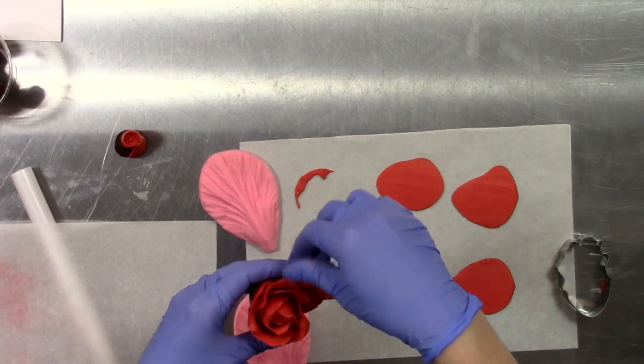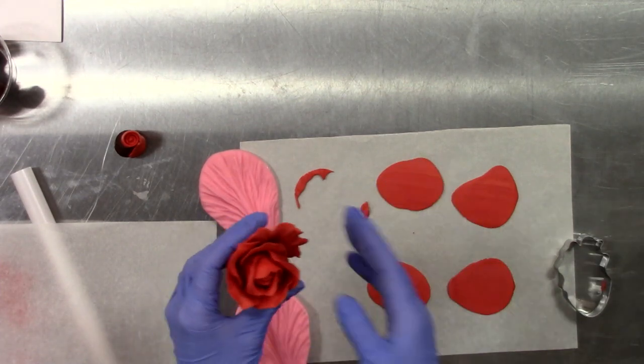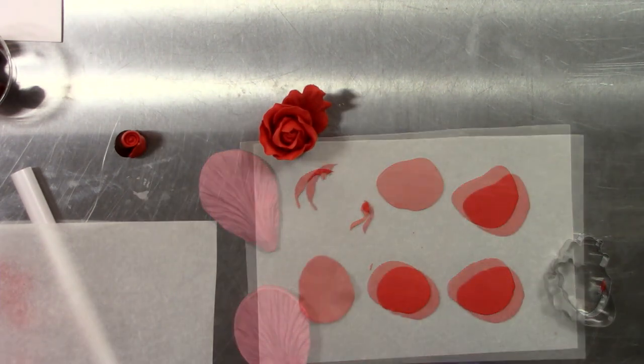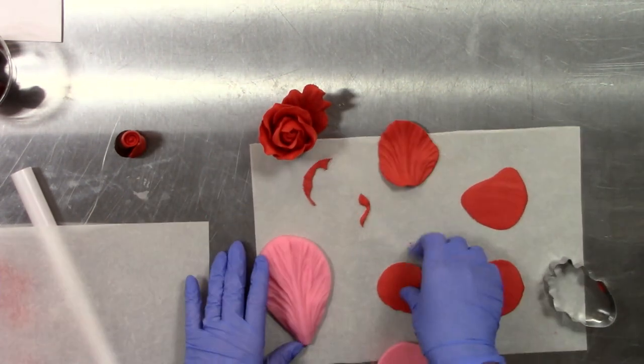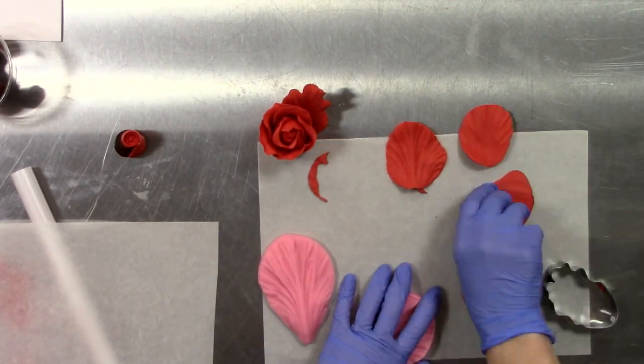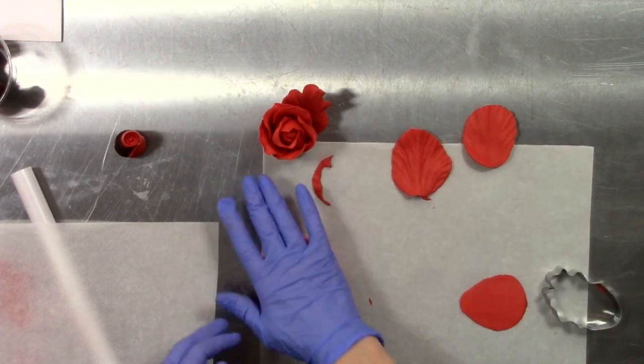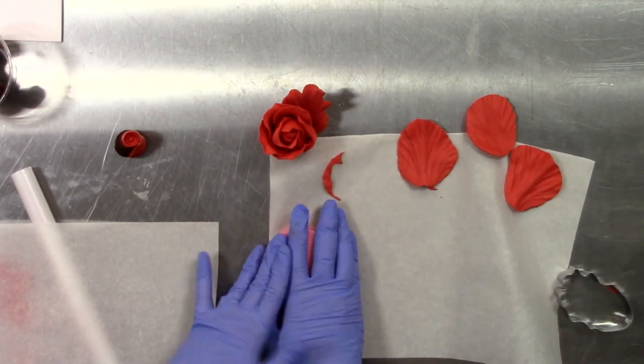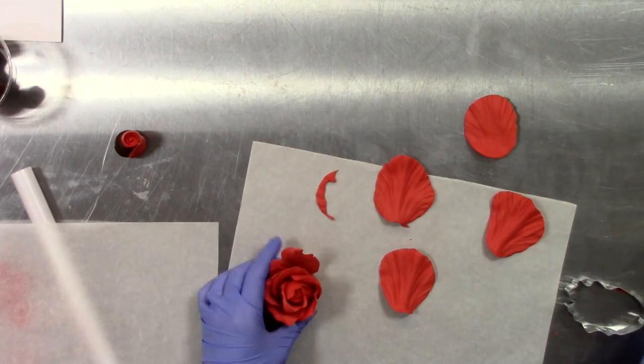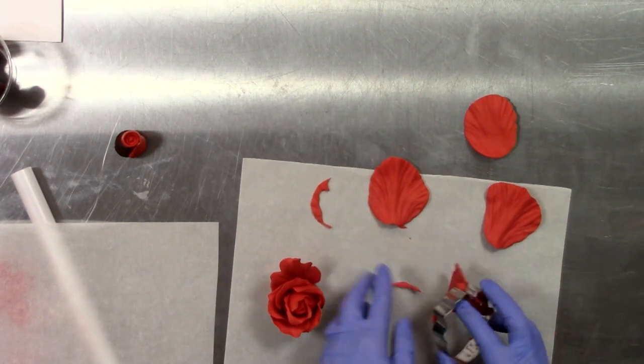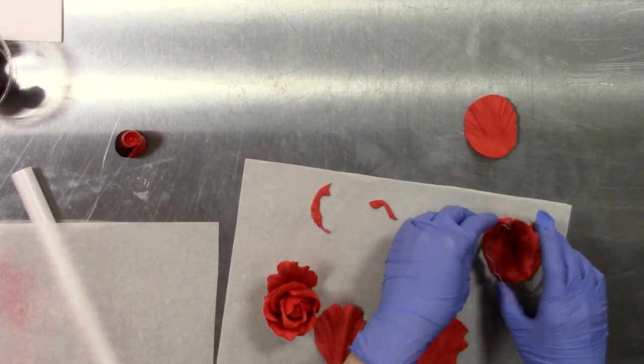We're going to continue veining and then attaching these the same way we did the other petals, leaving our right side free so we can slip the next petal into the first petal. So I've got all of my petals cut one at a time here.